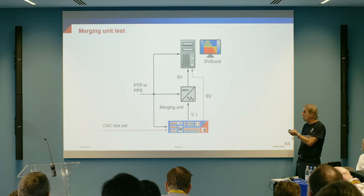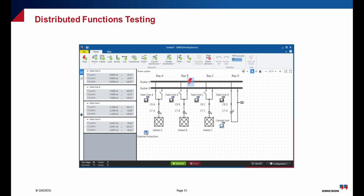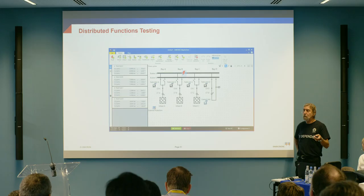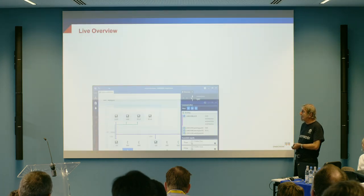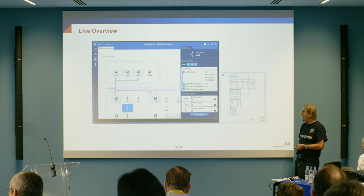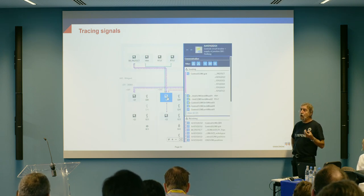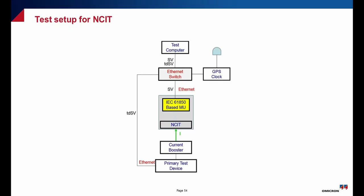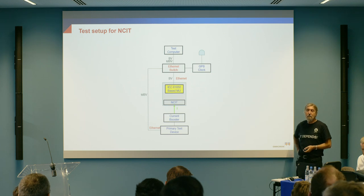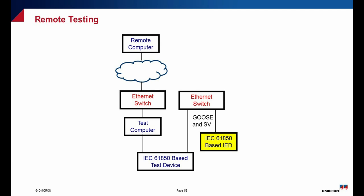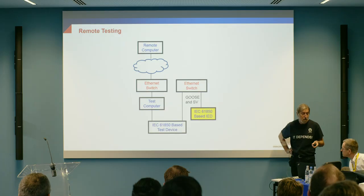It is very important to have tools for testing merging units, tools that allow you to test distributed applications within the substation, between substations, in wide area networks, system integrity protection schemes, etc. Or to have a live overview of what is going on in the substation and to trace different signals in order to identify any potential problems. Having proper tools is a very critical step required for the successful implementation of the standard. In digital substations with non-conventional sensors, secondary injection doesn't work, so we need to do testing with primary injection as part of commissioning. Another capability is remote testing to eliminate trips to the substation under dangerous conditions.